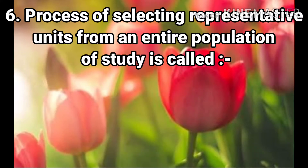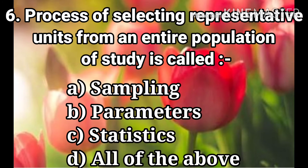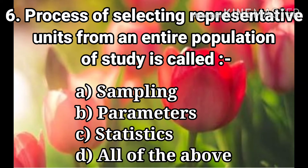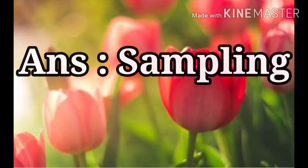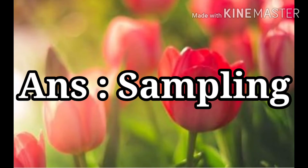Question 6: The process of selecting a representative unit from an entire population of study is called. The options are Sampling, Parameters, Statistics, and All of the above. The answer is Sampling.